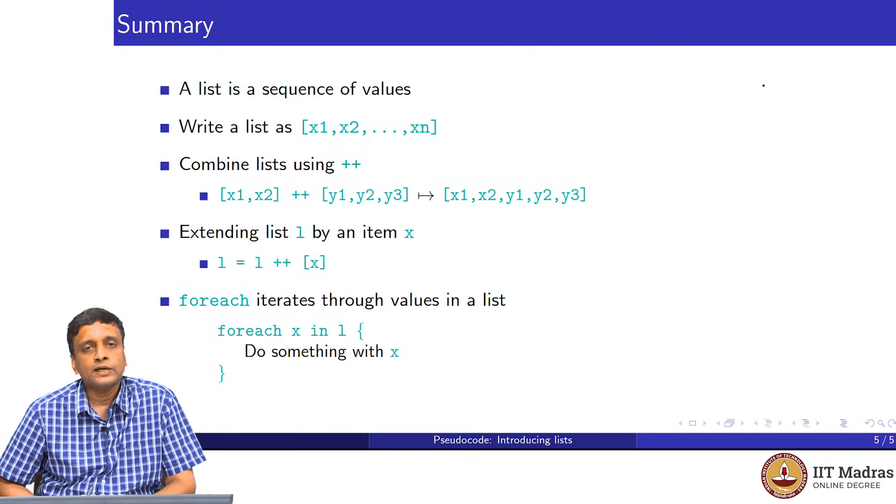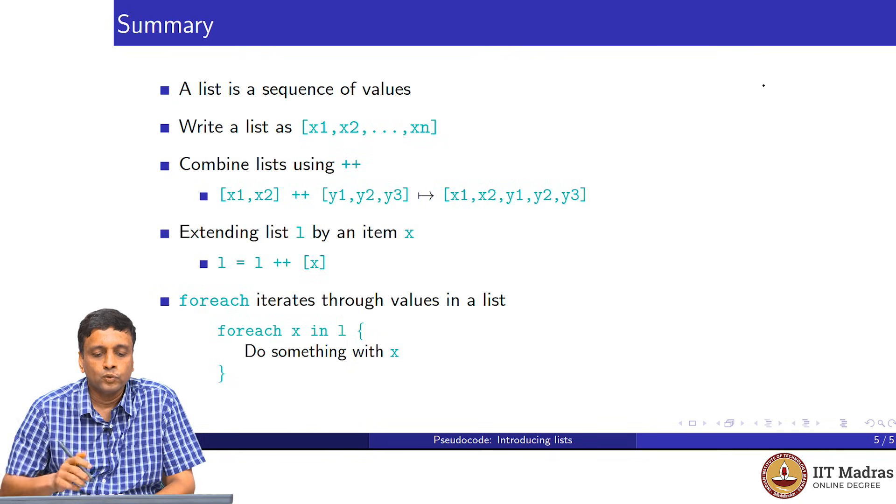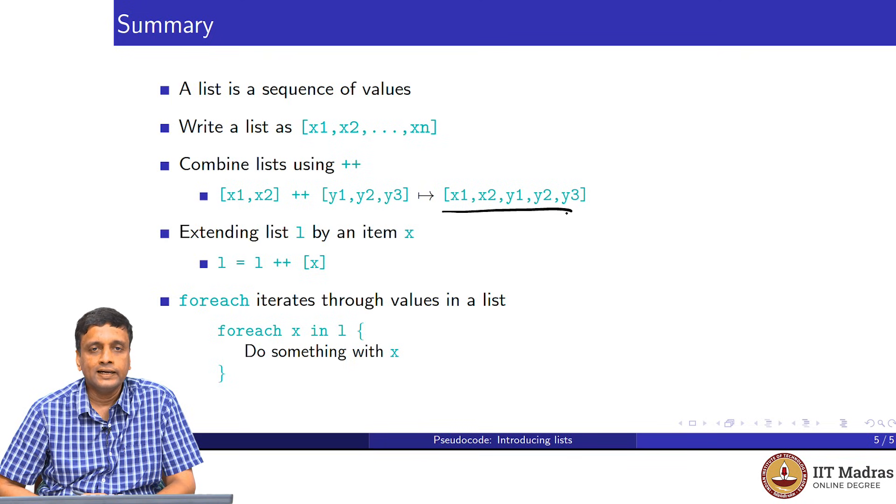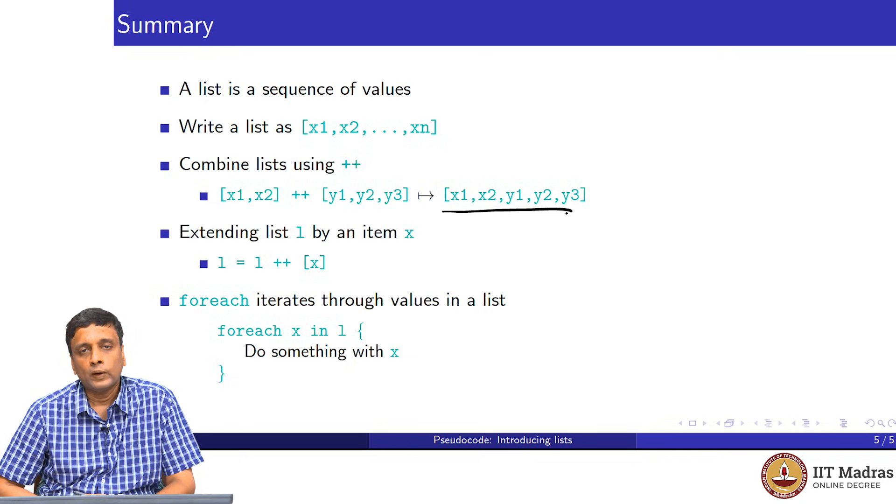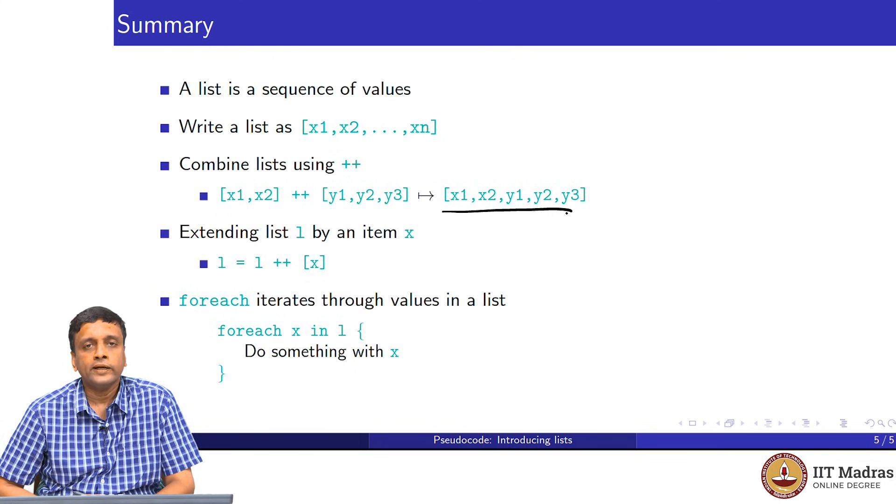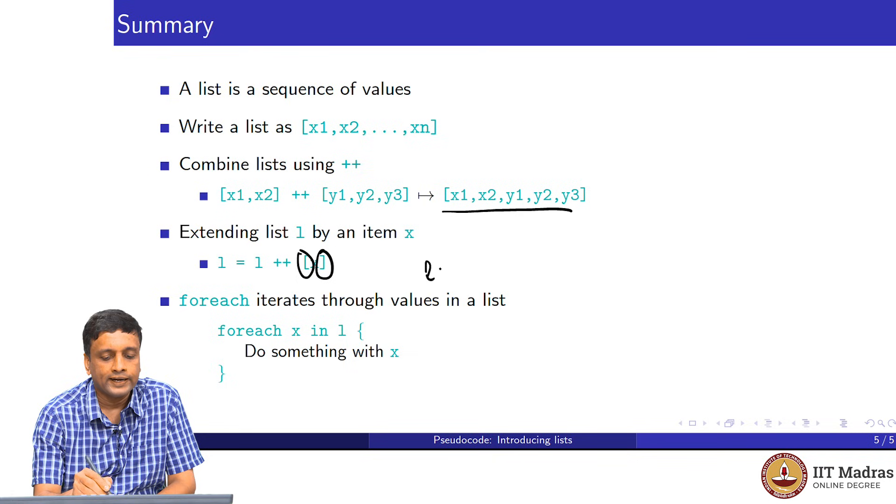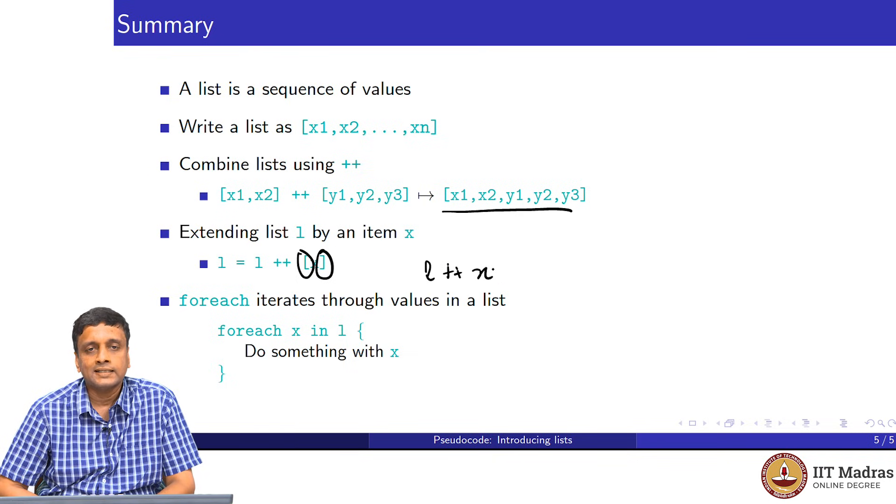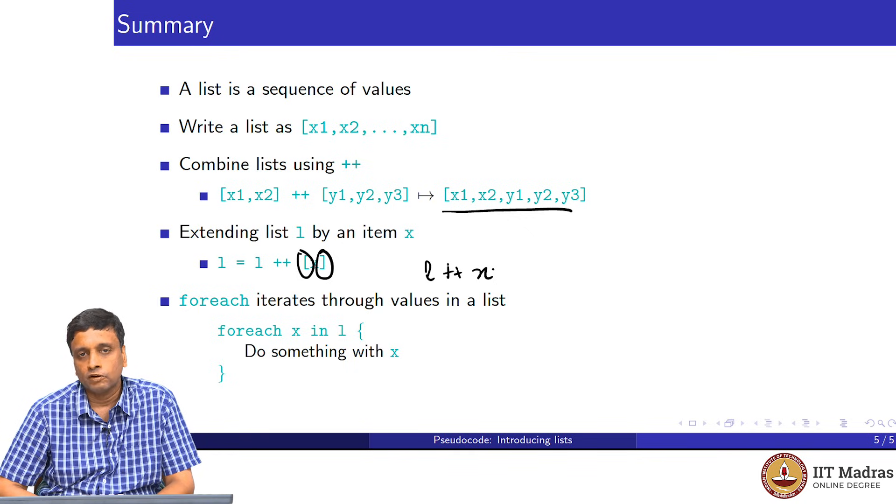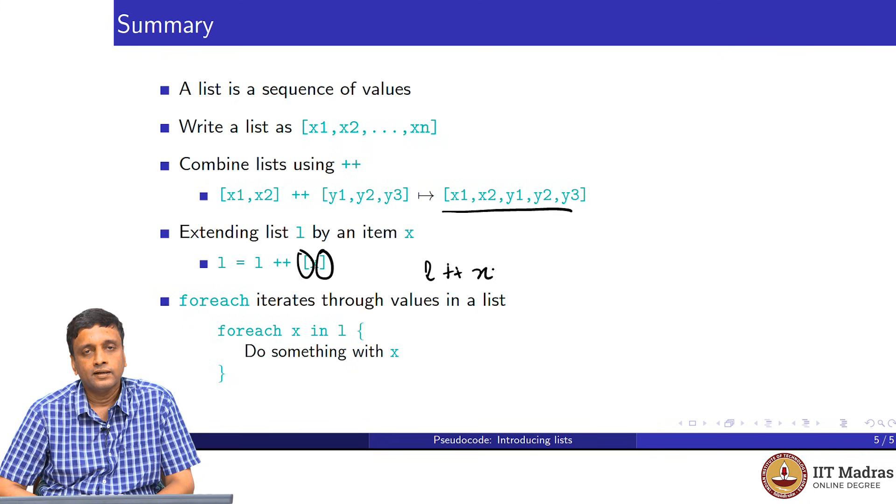To summarize, a list is a sequence of values, which we write within square brackets separated by commas. And we combine lists using ++. x1, x2, a list with two elements, ++ y1, y2, y3, a list with three elements will give us a new list which has five elements in the same sequence left to right. The second argument of ++ is added to the right of the first argument and you basically dissolve the boundary and make it a single list. As we saw, one important use of this ++ is to attach one new item to a list, where we say l ++ the new item within square brackets. These square brackets are important because without these square brackets, if I write l ++ x, this is not a well formed expression because l ++ x has a list on one side and it has a single item on the other side. We need two lists for ++. And in order to process lists, we saw this foreach operation. Foreach iterates through the values in list. This allows us to process lists systematically from beginning to end and do something with each element as we go along.